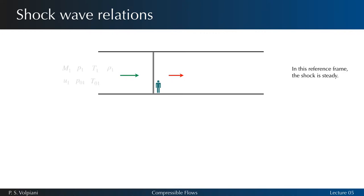We are interested in the relation between the flow properties before and after the shock. We first establish a control volume that includes the shock region and an infinitesimal amount of fluid on each side of the shock.